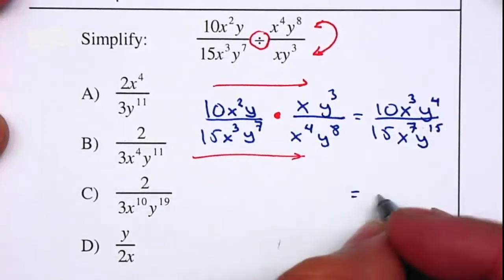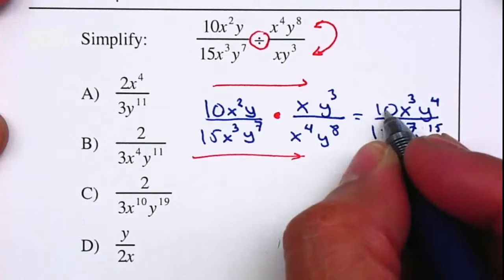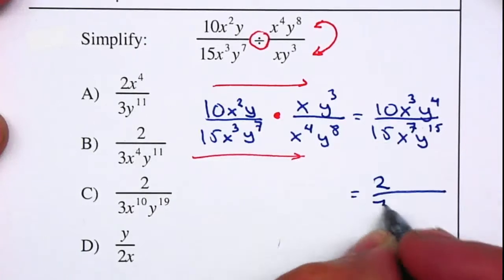And now we can reduce. We're going to start with the coefficients. We can divide by 5 by 5, so it gives me a 2. Divide by 5 gives me 3.